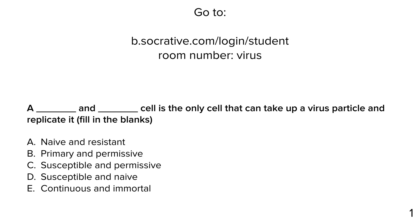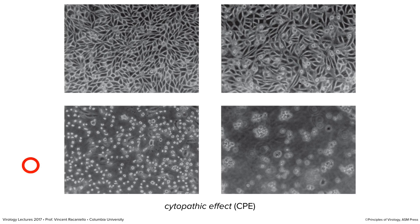A blank and blank cell is the only cell that can take up a virus particle and replicate it — fill in the blanks. The answer is susceptible and permissive. 100% of you got it right on lecture number two — I'm impressed; that usually takes until lecture 10 or 12. Susceptible cells means they have a receptor; permissive means they are internally able to replicate the virus.